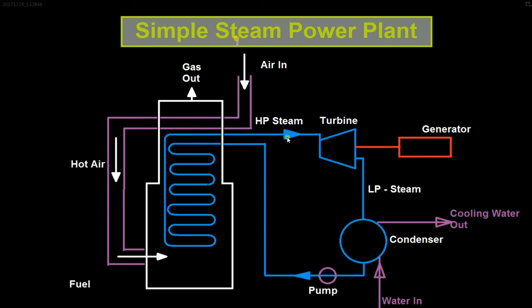The rotation of the turbine blades is used to generate power in the generator. Once the power of the steam is used to rotate the turbine, the high pressure steam loses its pressure and becomes low pressure steam, which is then transferred into the condenser. In the condenser, the steam undergoes a phase change by losing heat and becomes water.